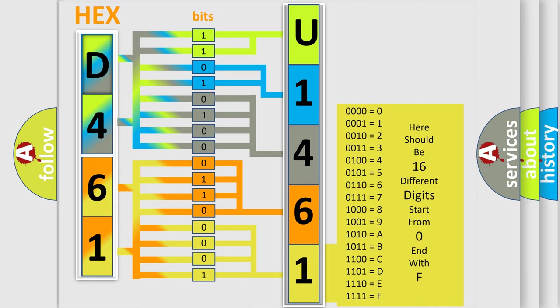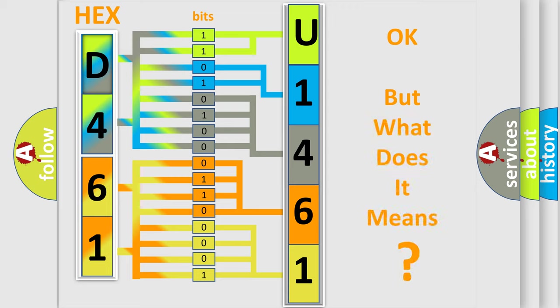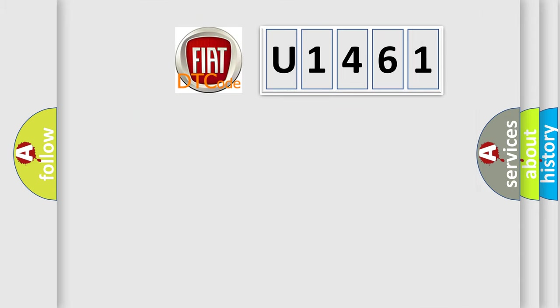We now know in what way the diagnostic tool translates the received information into a more comprehensible format. The number itself does not make sense to us if we cannot assign information about what it actually expresses. So, what does the diagnostic trouble code U1461 interpret specifically for FIAT car manufacturers?